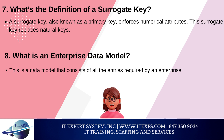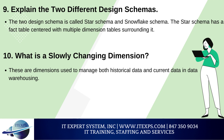Question 8: What is an enterprise data model? This is a data model that consists of all the entries required by an enterprise. Question 9: Explain the two different design schemas. The two design schemas are called star schema and snowflake schema. The star schema has a fact table centered with multiple dimension tables surrounding it. A snowflake schema is similar, except that the level of normalization is higher, which results in the schema looking like a snowflake. Question 10: What is a slowly changing dimension? These are dimensions used to manage both historical data and current data in data warehousing. There are four different types of slowly changing dimensions: SCD type 0 through SCD type 3.